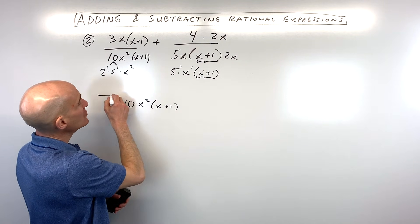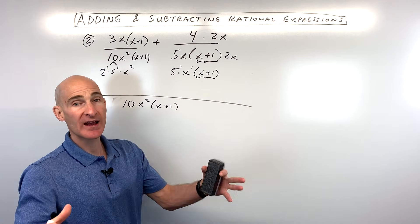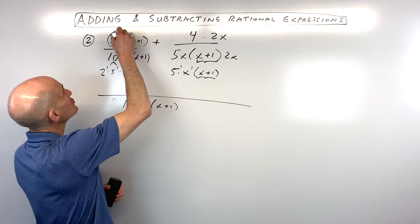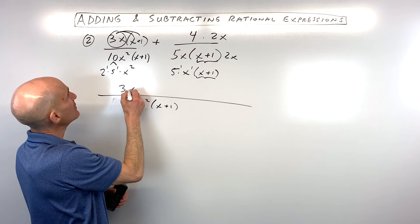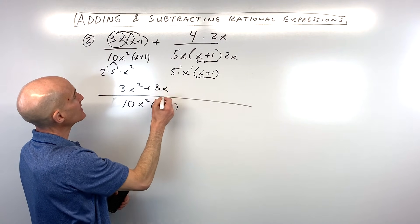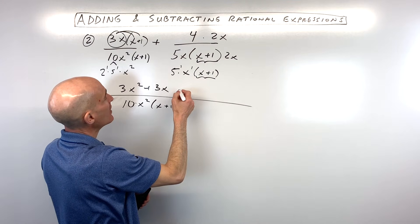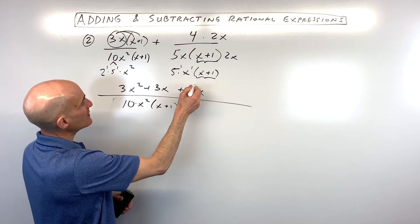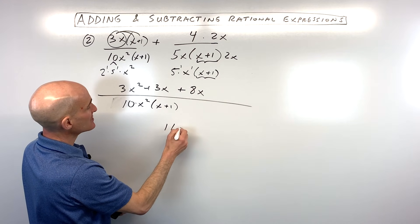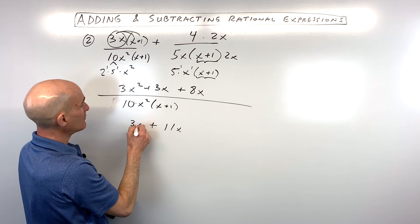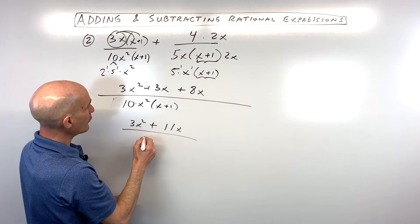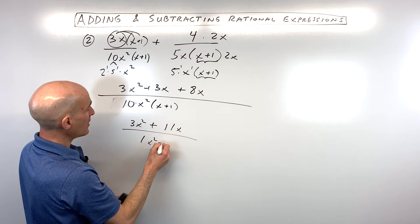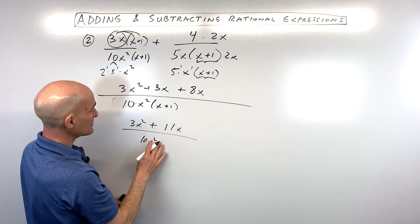Now we combine into one fraction with that common denominator and add the numerators. Distributing the 3x gives us 3x squared plus 3x. Over here, 4 times 2x is 8x. Combining like terms gives us 3x squared plus 11x, all over the common denominator 10x squared times x plus 1.